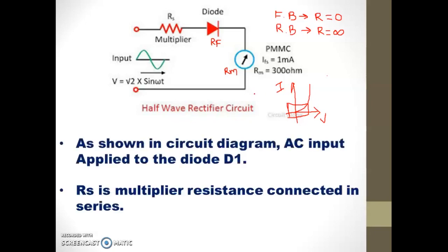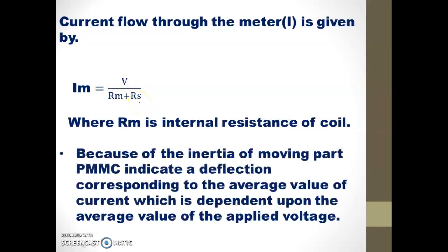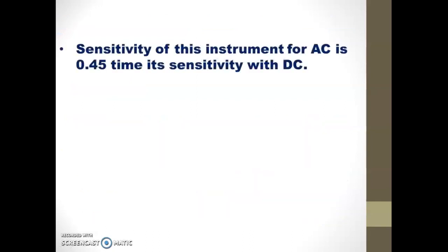After the rectification, the output from the diode goes to the PMMC instrument. The current flowing to the meter is given by IM, which is the ratio of voltage to the total series resistance, that is RM plus RS. Because of the inertia of the moving part of the PMMC, it indicates a deflection corresponding to the average value of current, which depends upon the average value of the applied voltage. The sensitivity of this instrument for AC is 0.45 times the sensitivity for DC.